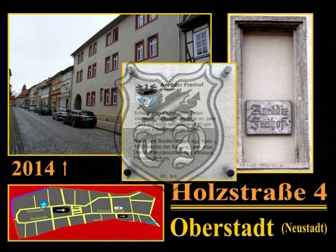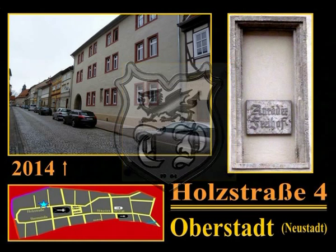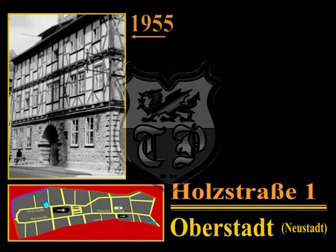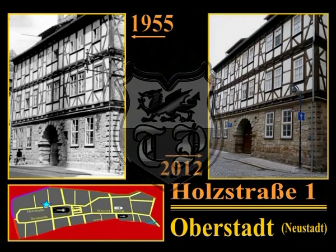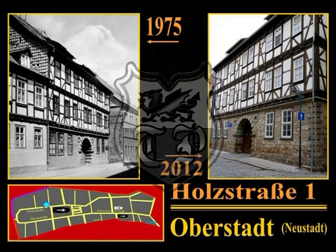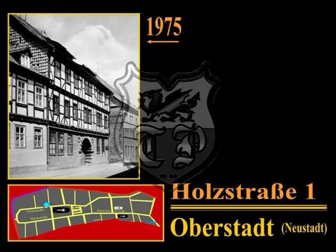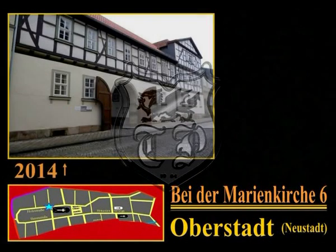Durch Säkularisation – Einziehung von Kircheneigentum durch den Staat – wurde das Kloster Anröde im Jahre 1810 geschlossen; der Anröder Freihof wurde Privateigentum. Das Haus Holzstraße 1 trägt am Lagebalken über dem Tore die Inschrift: 'Eine getreue Hand geht durch alle Land. Als Zellscher Hof bin ich bekannt. Ich ward auch Turn- und Taxes Posthaus genannt. Haus Fried ist Haus Freund.' Erbaut wurde dieses Gebäude wahrscheinlich Mitte des 13. Jahrhunderts. Der damalige Zellscher Freihof wurde beim Stadtbrand 1340 stark beschädigt; von 1358 bis 1360 neu aufgebaut, diente er aber schon seit 1334 als Turn- und Taxes Posthaus. Bis 1802 wurde der gesamte Postverkehr von, nach und über Mühlhausen hier abgefertigt.